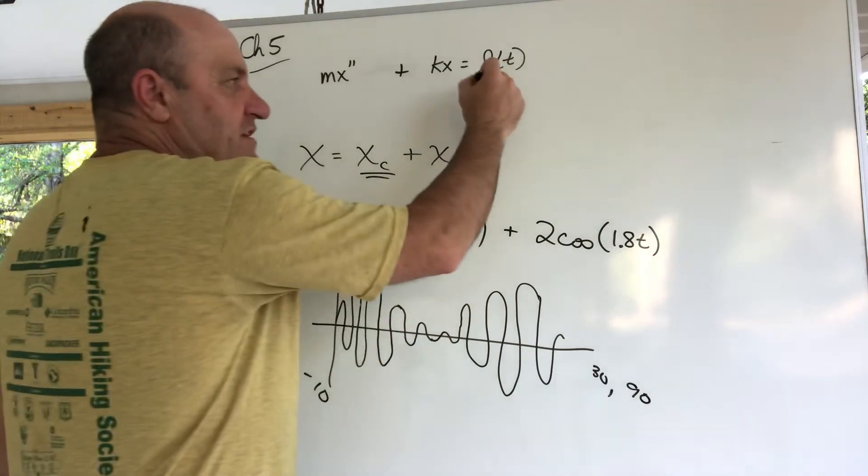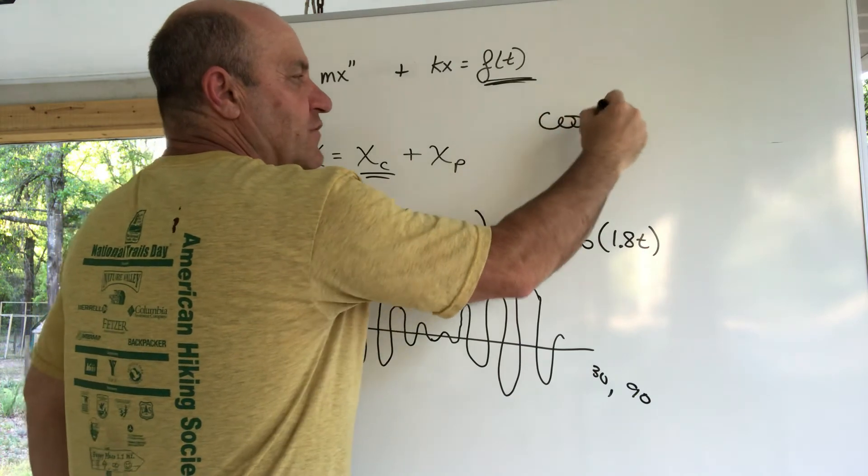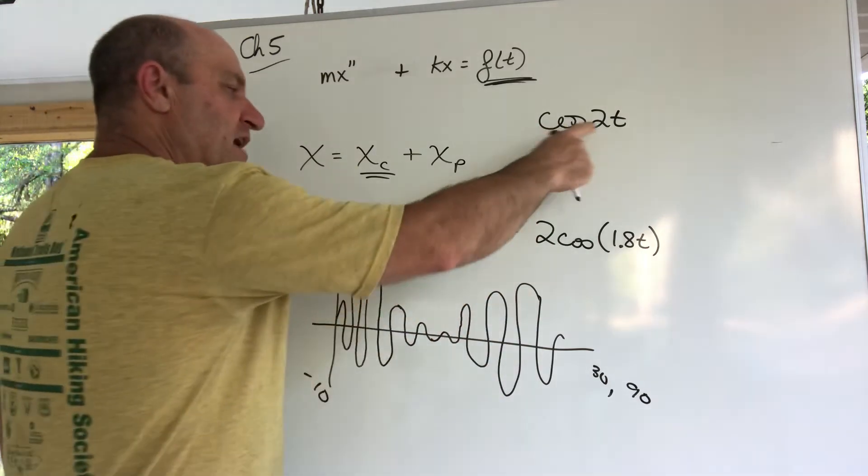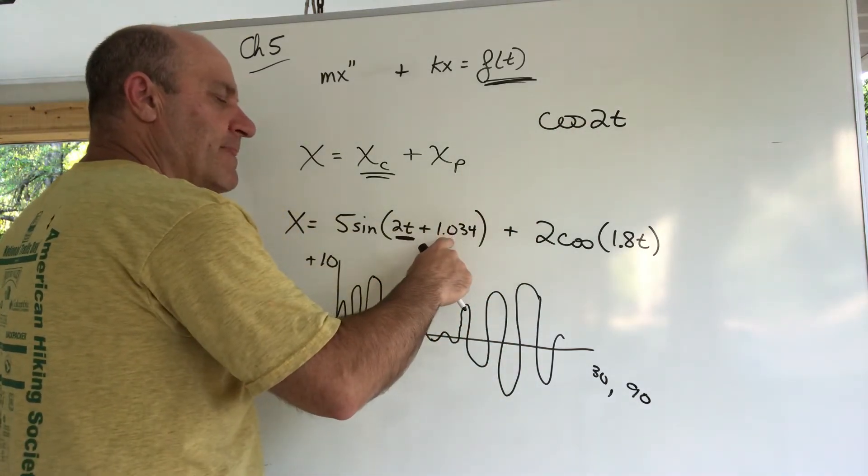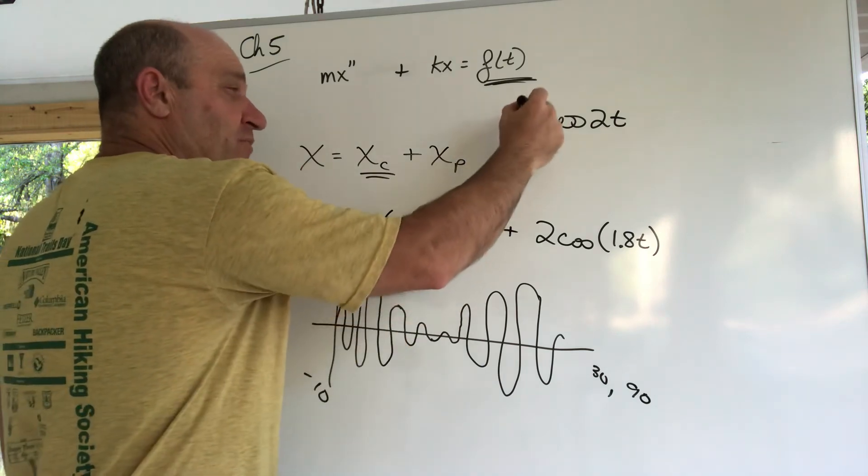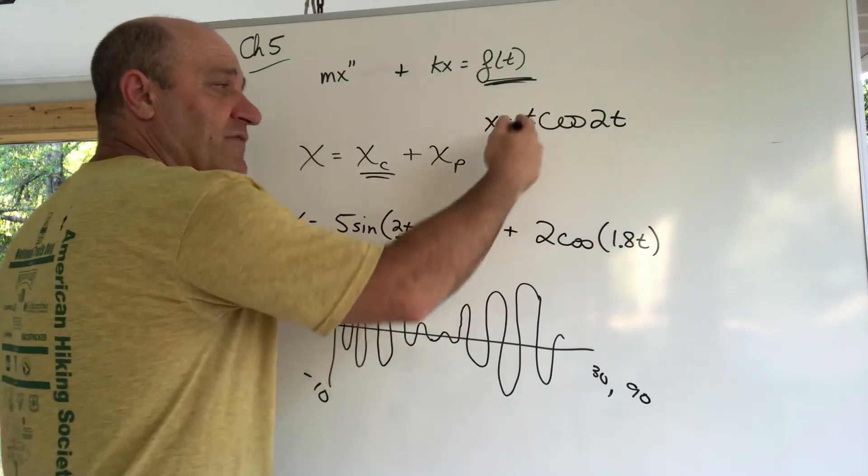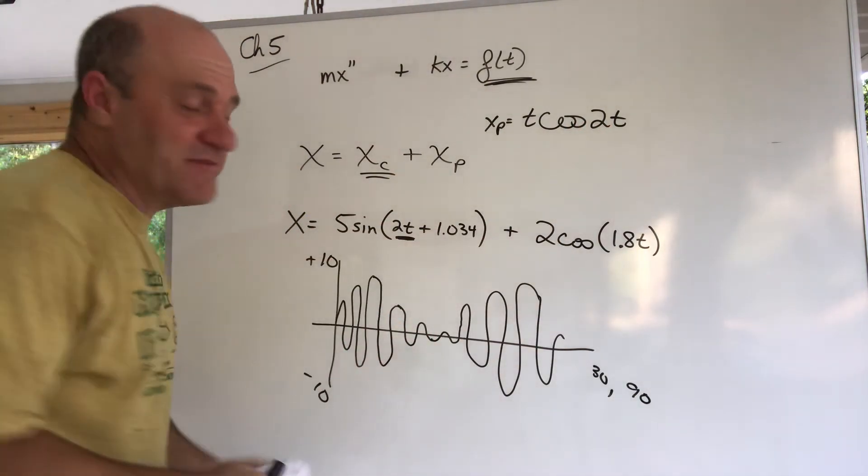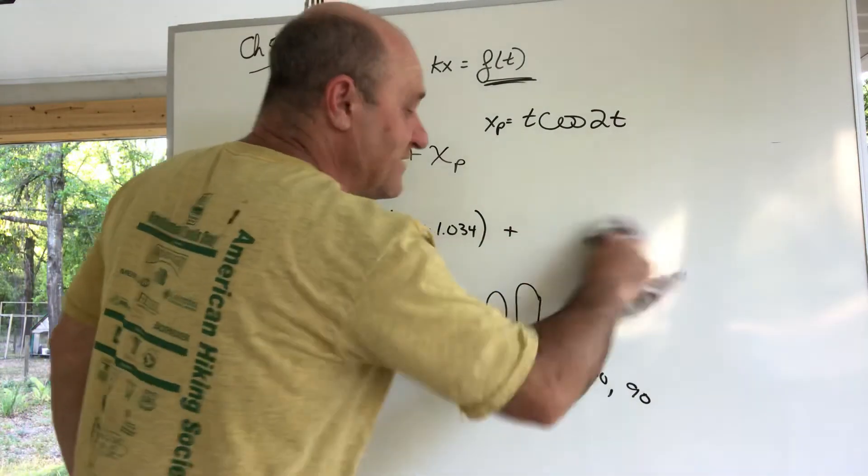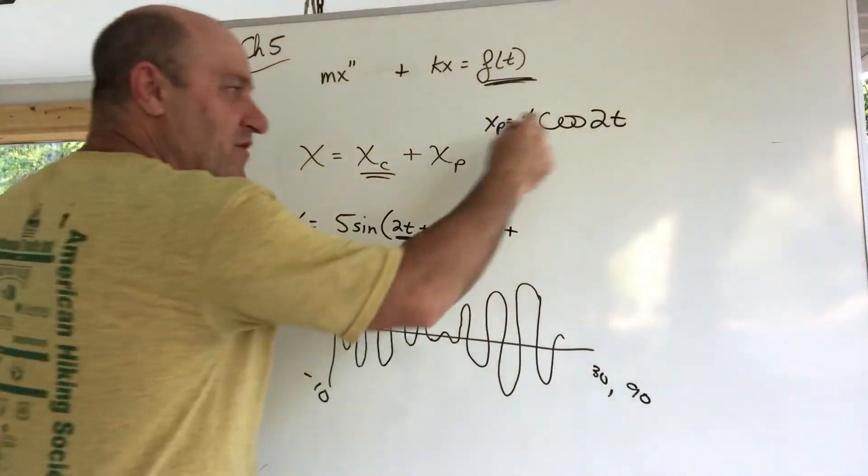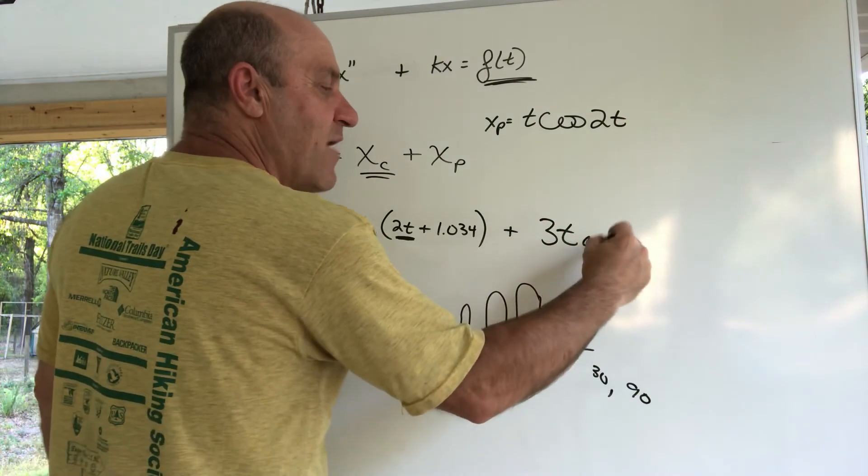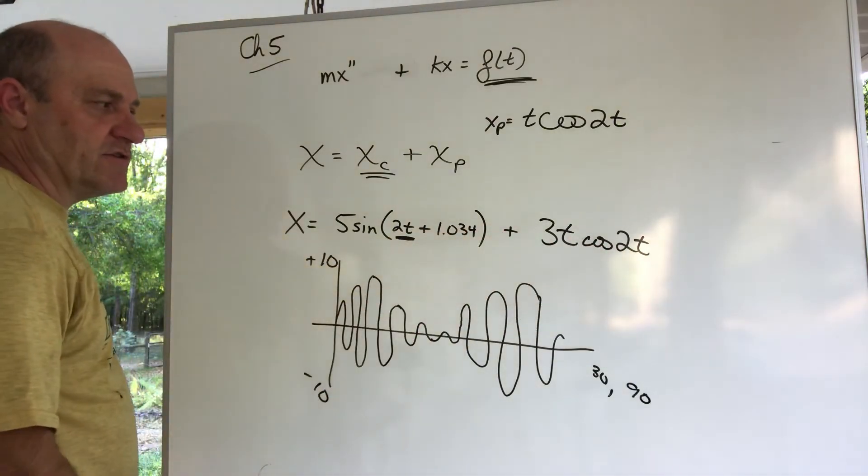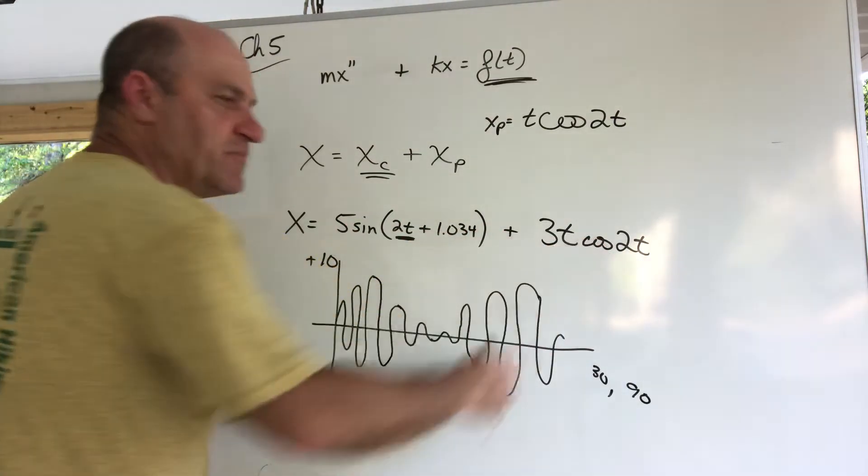Now what would happen if this had the frequency of 2t or this had the 2t and what if this non-homogeneous part had a cosine 2t? Well remember we would have dependency, and if we had dependency we'd have to multiply by t when we have to guess our xp. So just for fun let's pretend we did one of these problems because they're kind of hard to do, I think you have to do one on your test. But when you have dependency, let's just say we did the dependency and now we've got something like this that came out as our answer.